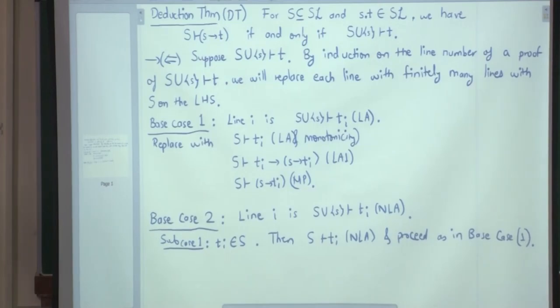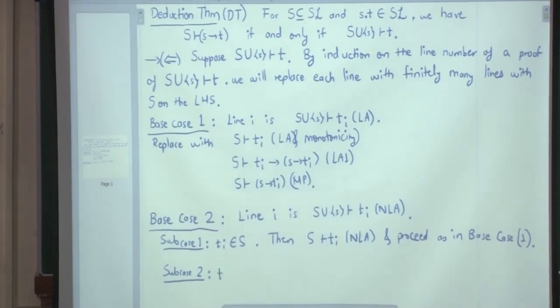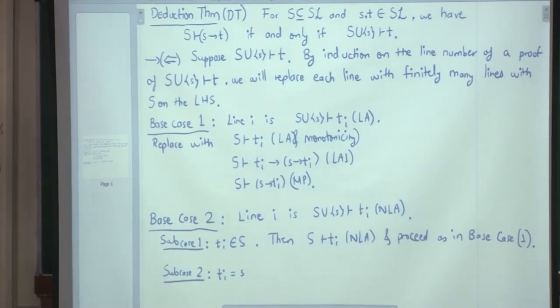Okay, so now, subcase 2 is more interesting. Subcase 2: T_i is equal to little s. T_i belongs to singleton S. So, T_i is equal to S. So, what do we want to prove? Tell me.